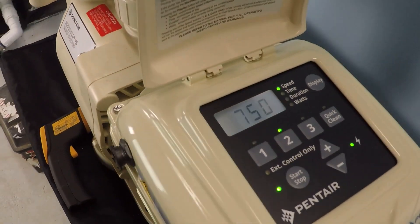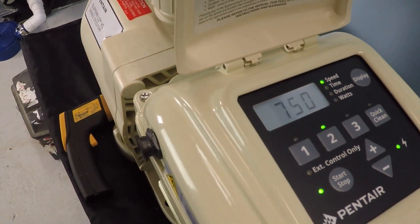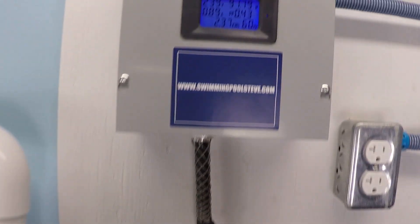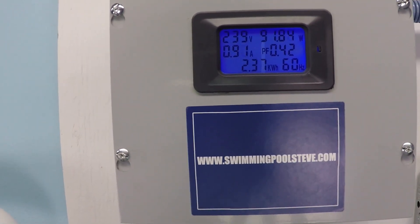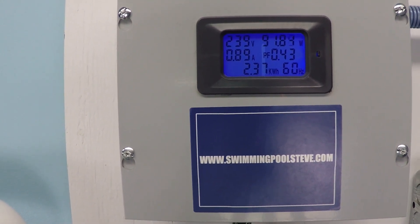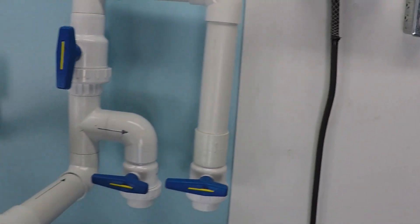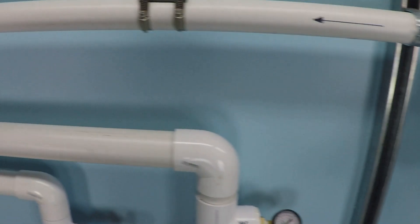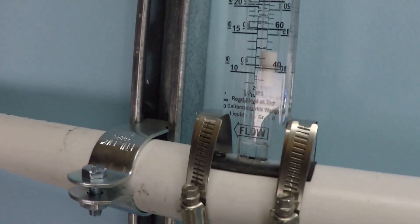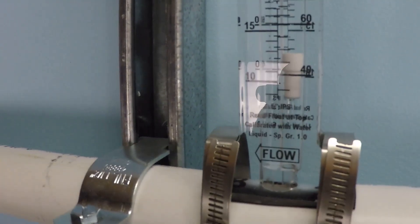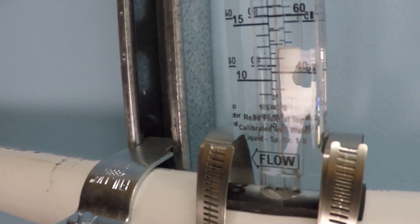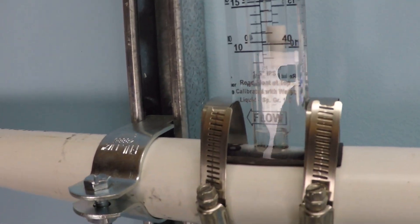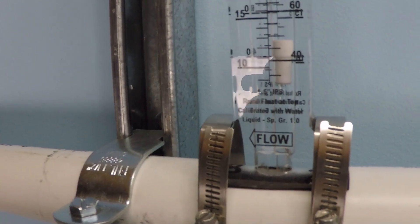Let's go, already running. 750 RPM, electrical consumption at that rate is 0.9 amps, 91 watts. Flow rate under this condition, just about 13 gallons per minute.